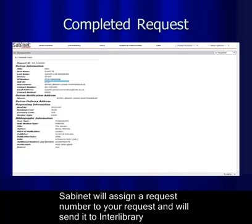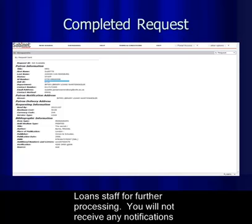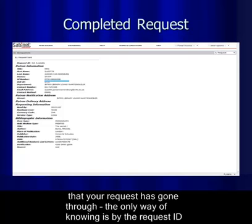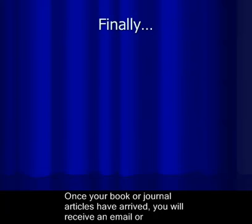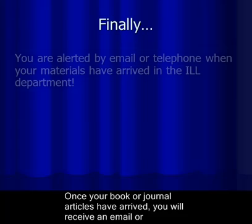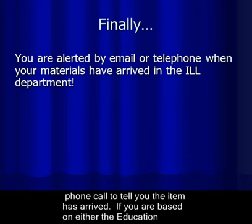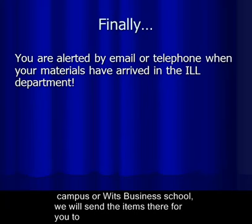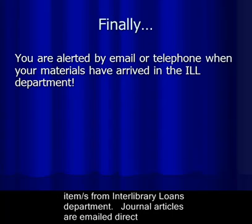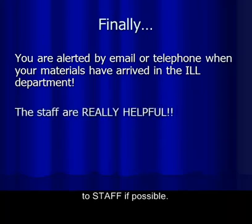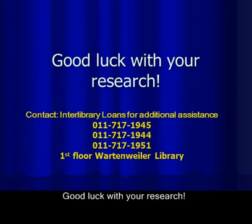SubNet will assign a request number to your request and send it to interlibrary staff for processing. You will not receive a notification that your request has gone through — the only confirmation is the assigned request ID. Once your book or journal article has arrived, you will receive an email or phone call. If you are based at the Education Campus or First Business School, items will be sent there for collection. If you are on East or West campus, collect items from the interlibrary loans department. General articles are emailed directly to staff if possible. Good luck with your research!